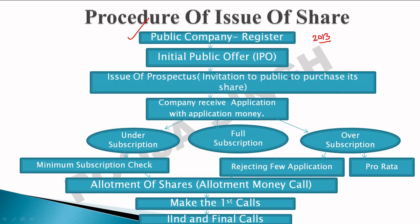Every public limited company must register under the Companies Act 2013. After registration, when the company wants to issue shares, it does an IPO — Initial Public Offer. The company does its advertisement, brings shares to the market, and issues a prospectus. The prospectus contains complete details: the registered office, future plans, value of shares, and the market launch.